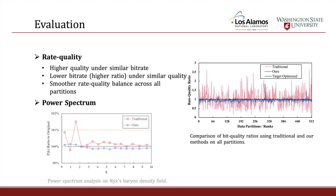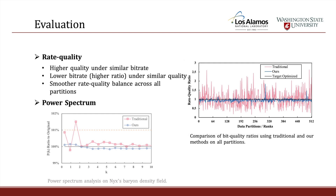Let's look at the rate quality results. We balance the rate-quality ratio across partitions. Compared to the traditional approach, which compresses all partitions with the same configuration and results in very different rate-quality ratios across partitions, our approach balances the rate-distortion ratio across different partitions, providing a solution very close to the target.